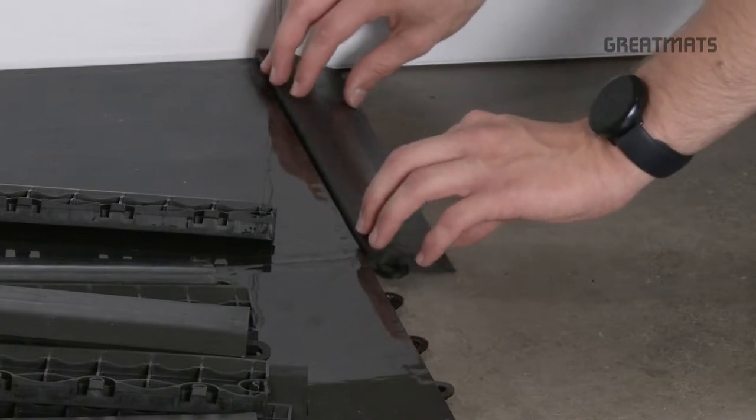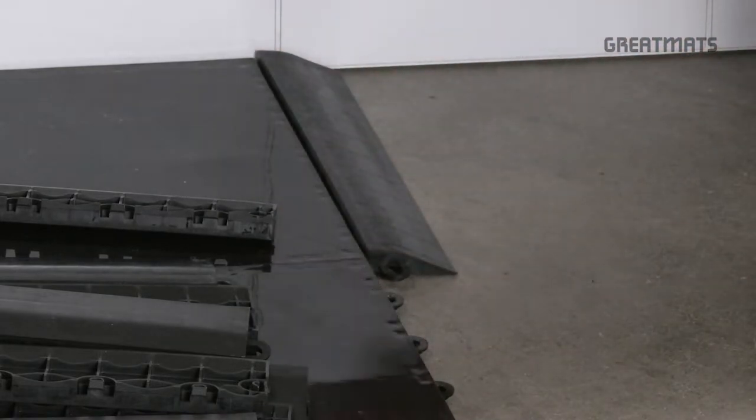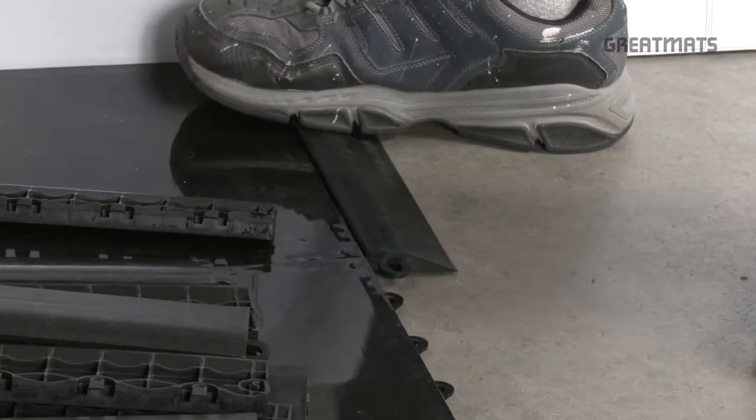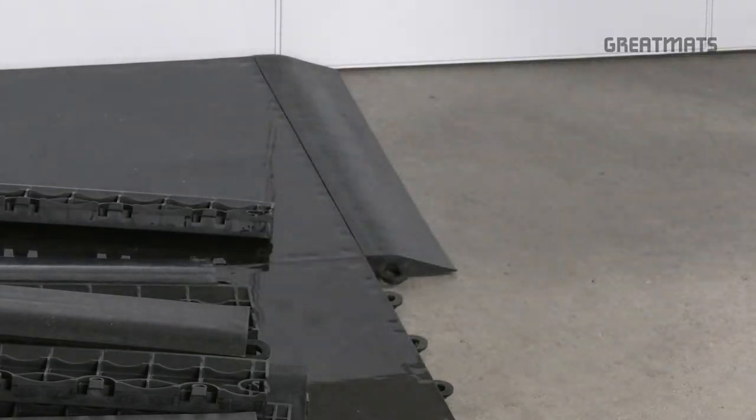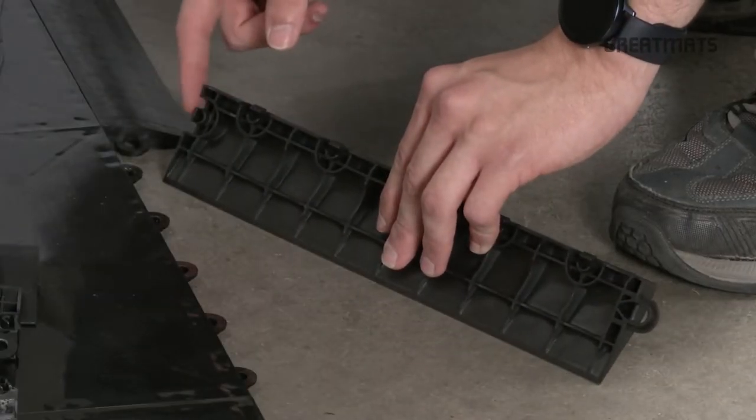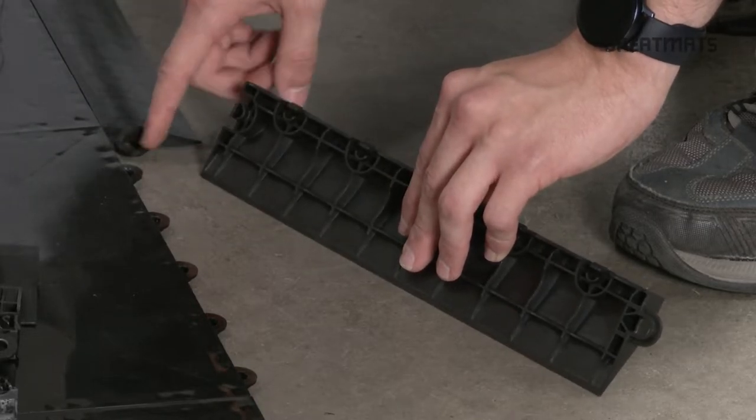So I'm going to put the tabs of the border strip over the loops of the tile and apply some pressure down until it clicks into place. And I'll keep moving forward. I see the tab over here which will line up with this border strip.